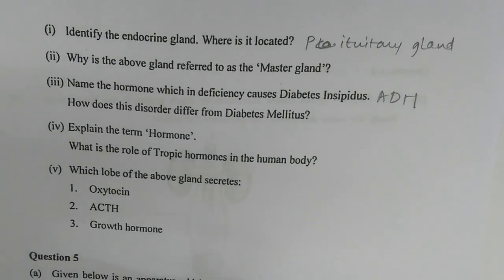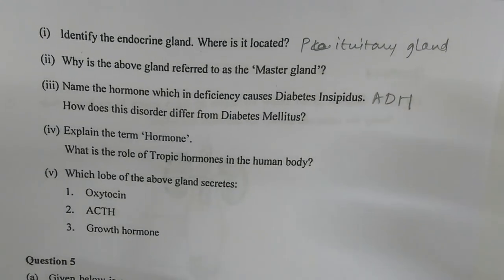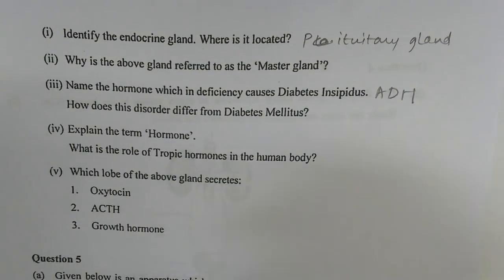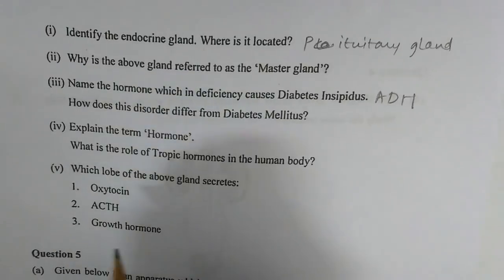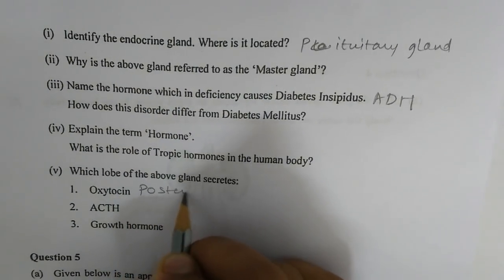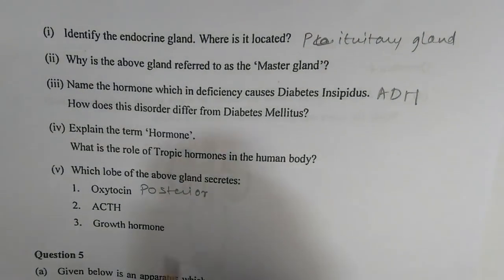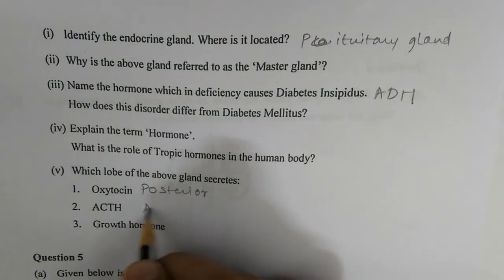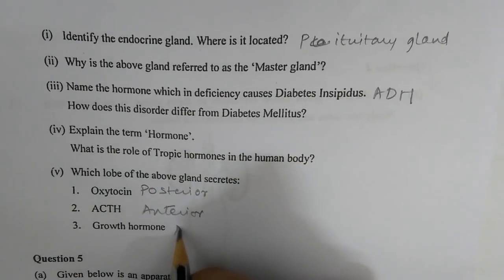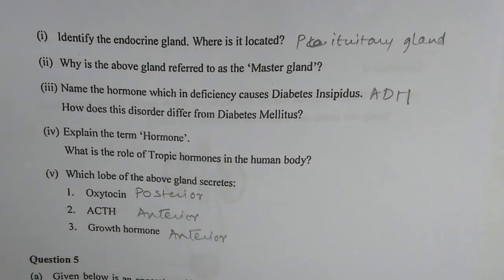What is the role of tropic hormones in the human body? They stimulate certain other endocrine glands. Number five — which lobe of the pituitary gland secretes: (1) oxytocin — the posterior lobe; (2) ACTH — the anterior lobe; and (3) growth hormone — also secreted by the anterior pituitary.